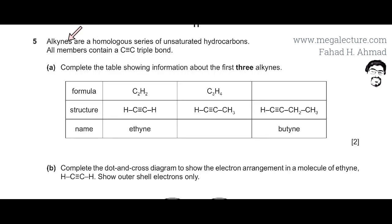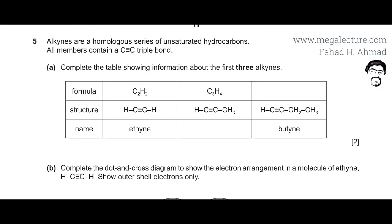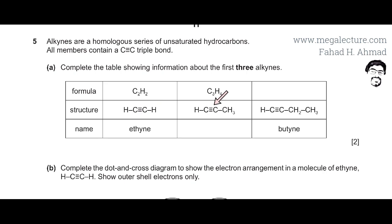The question states that alkynes have a homologous series of unsaturated hydrocarbons and all members contain a C triple bond C. We need to complete the table showing information about the first three alkynes. Remember, alkynes are not in your course, so you have to use your knowledge of organic chemistry. The first alkyne has two carbon atoms with a triple bond, the second has three, and the third has four carbon atoms with a triple bond.